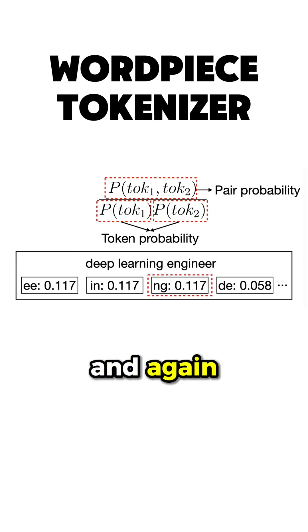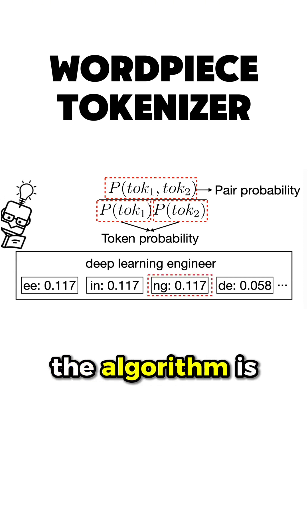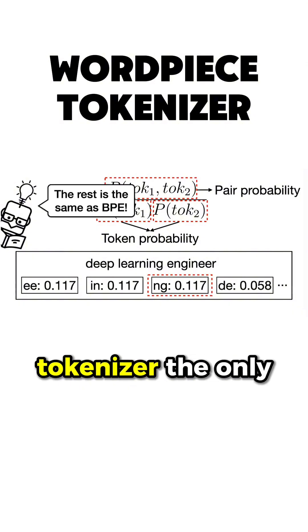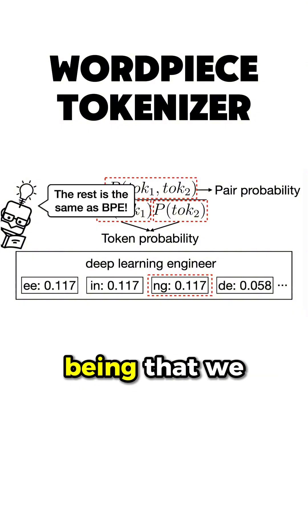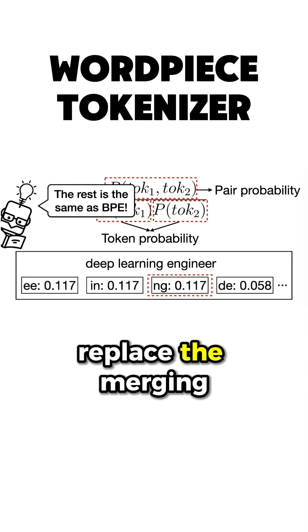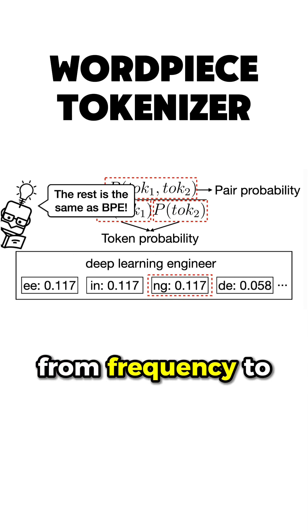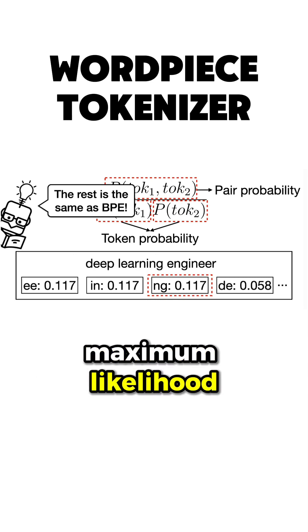And again, the rest of the algorithm is the same as in the BPE tokenizer. The only difference being that we replace the merging criterion from frequency to maximum likelihood.